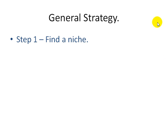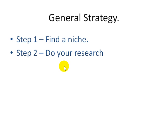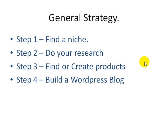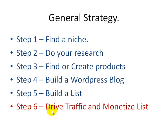Here's a quick breakdown of the general strategy: Step one is to find a niche. Step two is to do proper keyword research. Step three is to find or create products. Step four is to build a WordPress blog. Step five is to build a list. And last but not least, step six is to drive traffic and monetize that list.